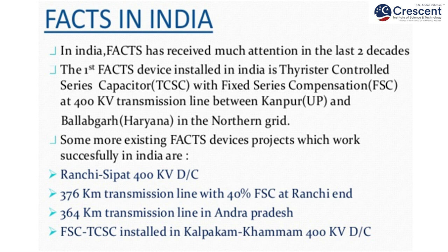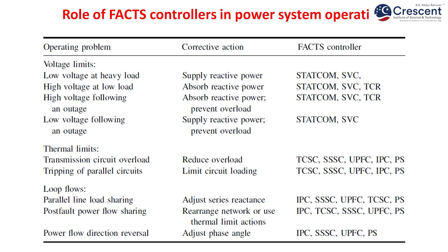FACTS in India: FACTS has received much attention in the last two decades. The first FACTS device installed in India is a Thyristor-Controlled Series Capacitor with fixed series compensation at a 400 kV sub-transmission line between Kanpur, UP and Ballabhagar in Haryana, in the northern grid. Other existing FACTS projects working successfully in India include the Ranchi–Sippat 400 kV BC with a 376 km transmission line with 40% FSC at Ranchi end, a 374 km transmission line in Andhra Pradesh, and FSC-TCSC installed at Kalpakkam–Kamam 400 kV DC.